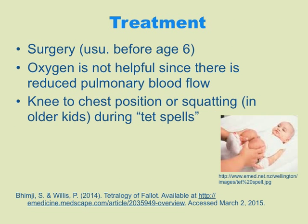Surgery is the most common treatment, usually done before age six, and these patients actually do very well. If they have mild disease they might not need surgery, but most babies do. Interestingly, oxygen is not very helpful since there is always mixing of the blood — oxygenating more doesn't significantly improve their stats. What we do teach parents is the knee-to-chest position, as shown here, and older kids will actually squat on their own — sometimes how TET spells are first diagnosed. When they have those spells and turn blue, pushing their knees up forces circulation and increases systemic vascular resistance, helping with oxygenation.